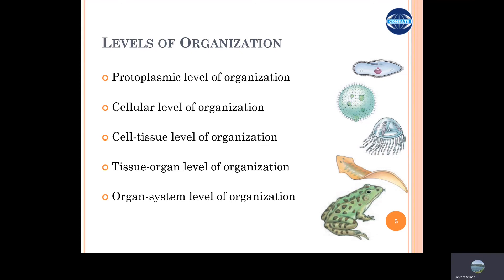The highest level of organization is the system level, where multiple organs interact and connect with each other to perform complex body systems and mechanisms, such as the alimentary system, respiratory system, or digestive system. In the digestive system, for example, many organs including liver, pancreas, intestine, and stomach are all responsible for the main function of nutrition and digestion. This type of organization is present in higher animals like mammals. In summary, the level of organization becomes more complex as animals evolve over time.